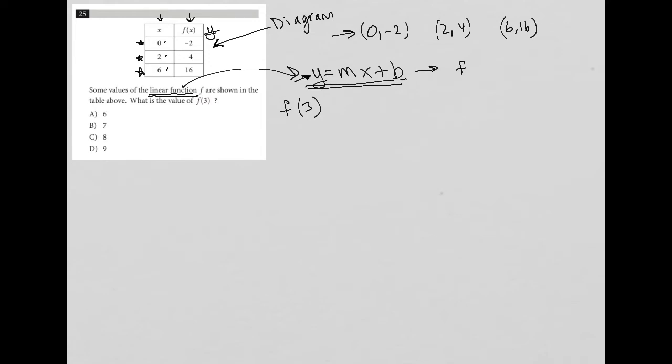Another way to write this is F(X) equals MX plus B. Remember, F(X) and Y are pretty much interchangeable. So if I can figure out what this linear function is, then I can just plug a 3 in for X and I'll be finished. Let's start breaking down the information provided in order to figure out what the function represents.